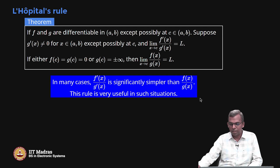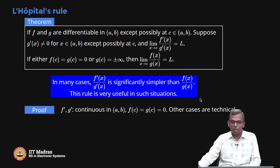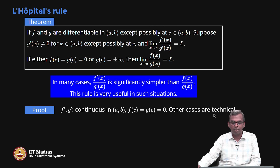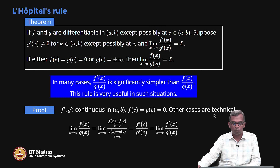This rule is very useful in these kinds of scenarios. I will show you a couple of simple examples and you will see how powerful this rule is. I am going to try and prove it — feel free to skip the proof, but I think it is good to know some cases. I am going to do a very simple case: the case where f' and g' are continuous in (a, b) and f(c) equals g(c) equals 0. This is the easiest case and it is a very simple proof. The other cases are technical and involve more complicated results.